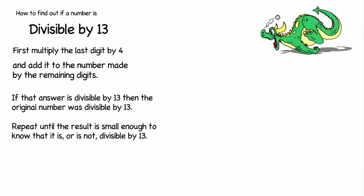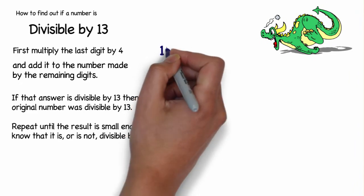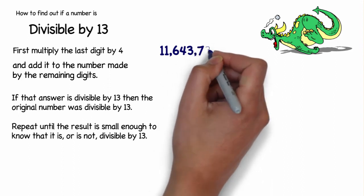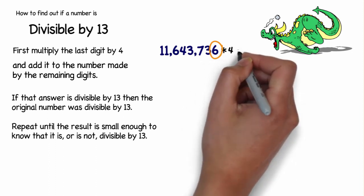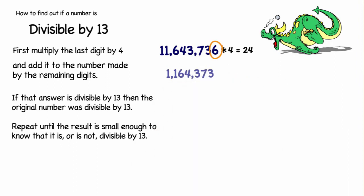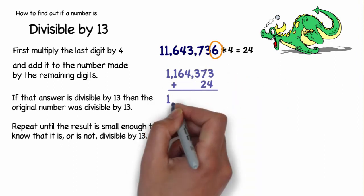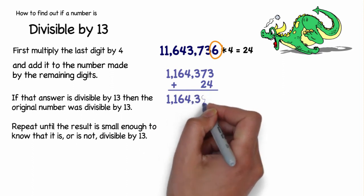We move on to 13. Our example number is 11,643,736. So what you do is you multiply the last digit by 4 and add it to the truncated number made by the remaining digits. As you see, with this long number, this could go on for a while. So, first, you take the 6 off 11,643,736, multiply it by 4, 6 times 4 is 24, and add it to the new number, getting 1,164,397. Then you do the same thing with 7. 7 times 4 is 28.